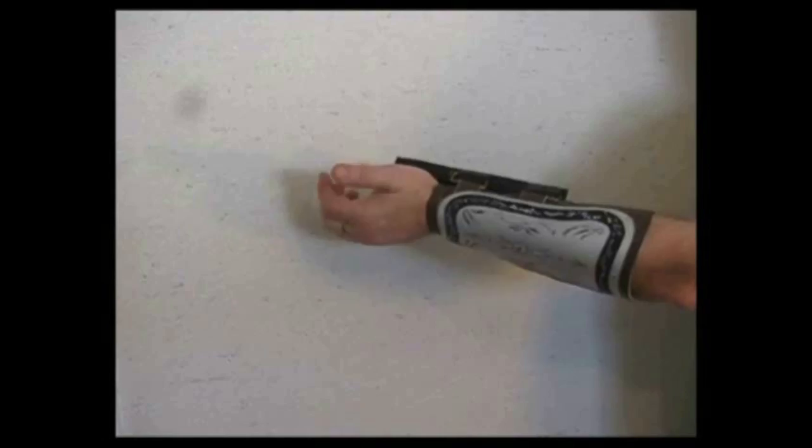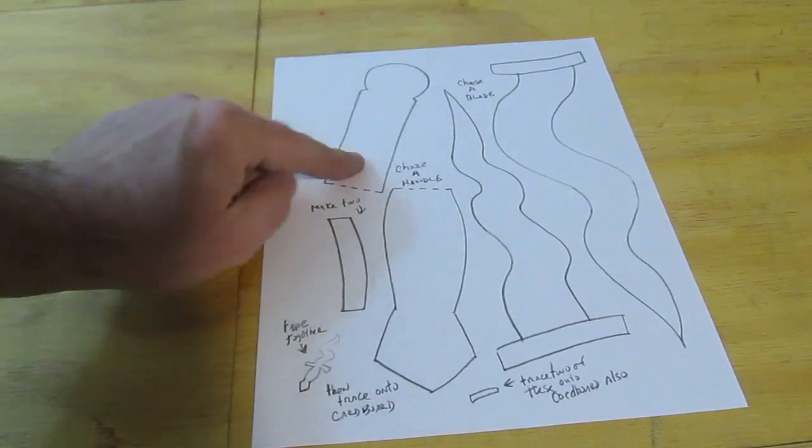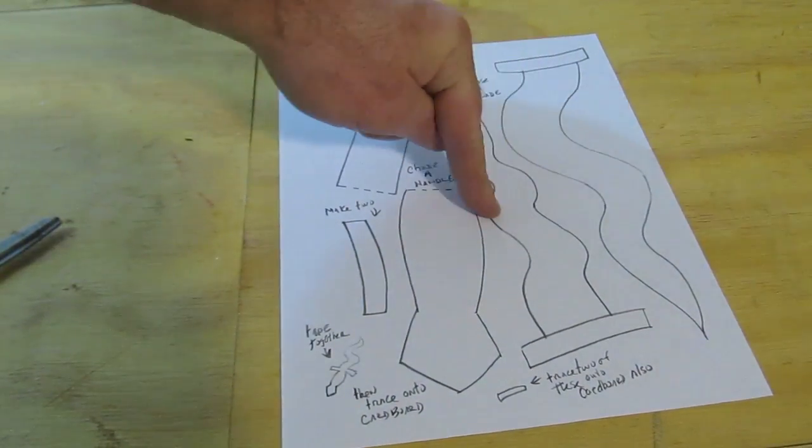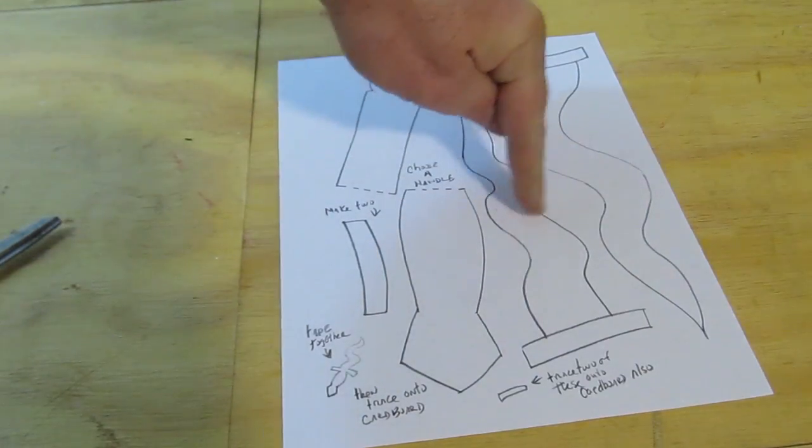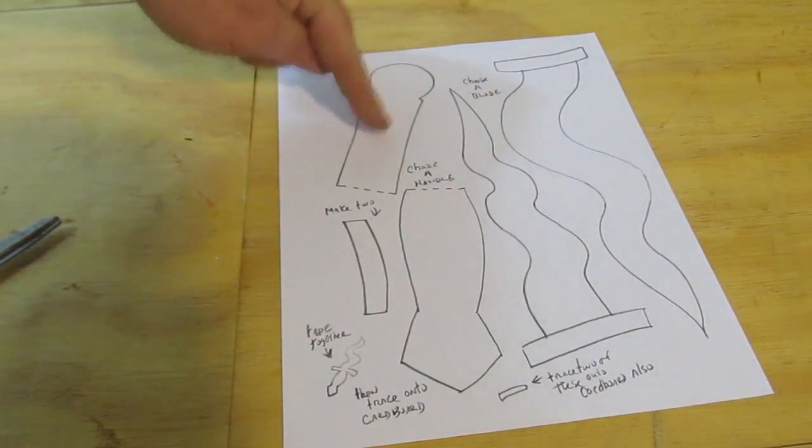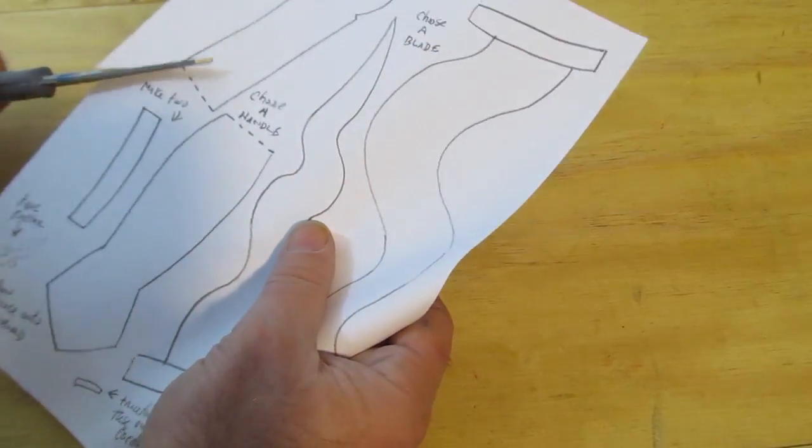So print up the template, there are two handles and two blades. See? And one piece for the guard. I'm picking this one and that one. And you can mix and match them any way you want.